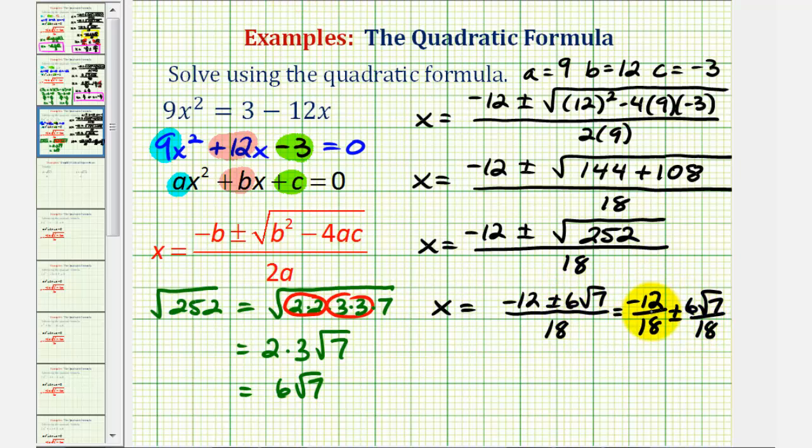The common factor of 6 in 12 and 18. There are three 6's in 18 and two 6's in 12. Again, we have a common factor of 6. There are three 6's in 18 and one 6 in 6. So our solutions are x equals negative 2 thirds plus or minus square root 7 over 3.